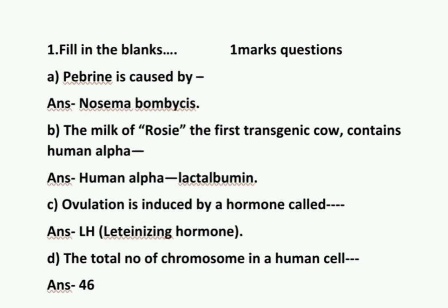Question number B: The milk of Rosie, the first transgenic cow, contains human alpha — the answer is human alpha-lactalbumin.